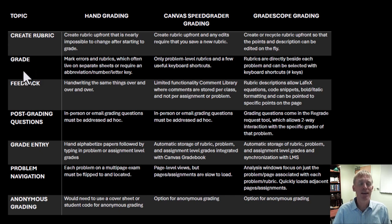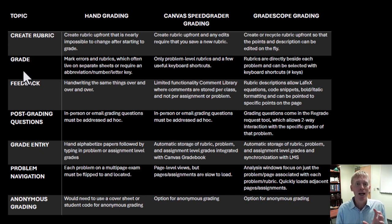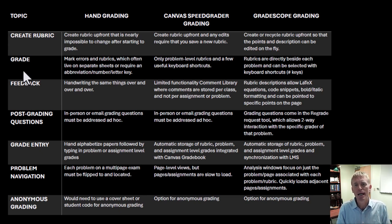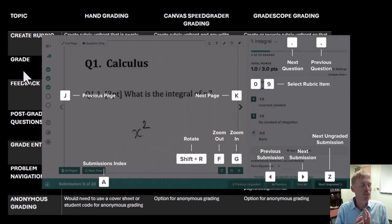Now let's look at the actual grading process. With hand grading, you're marking errors and rubrics, which are often living in a separate place — a separate sheet or spreadsheet — and you often have to provide students a key for abbreviations because you don't have time to write all those comments on the paper. SpeedGrader has some useful keyboard shortcuts, but there are only problem-level rubrics. With Gradescope, rubrics live right beside each problem and can be selected with keyboard shortcuts. Keyboard shortcuts are a massive time saver.